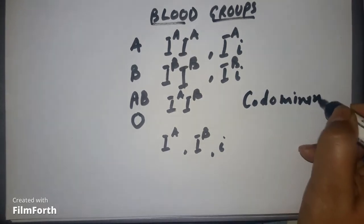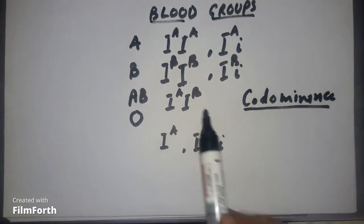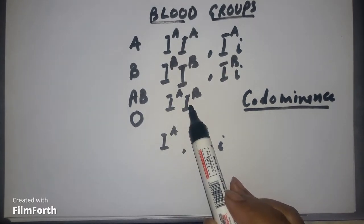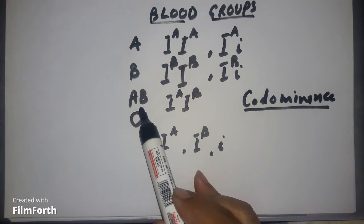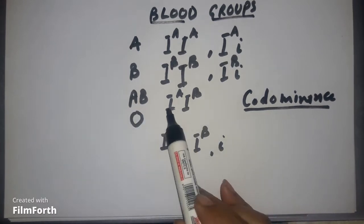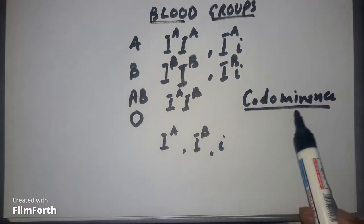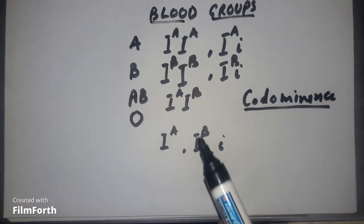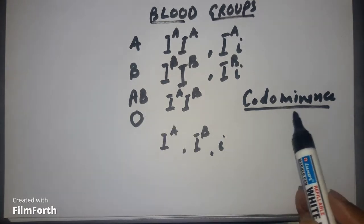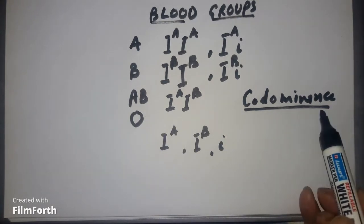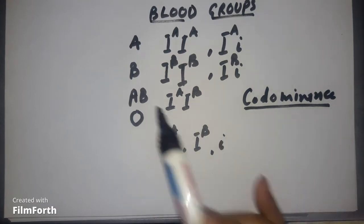Co-dominance is the phenomenon where two dominant genes contribute to the phenotype in the individual. This phenomenon is called co-dominance, and human blood group AB is the classic example. So if you are asked in the exam to explain co-dominance, give the example of blood group AB.